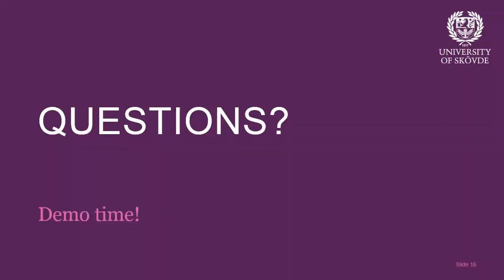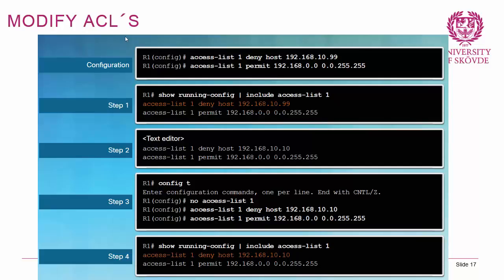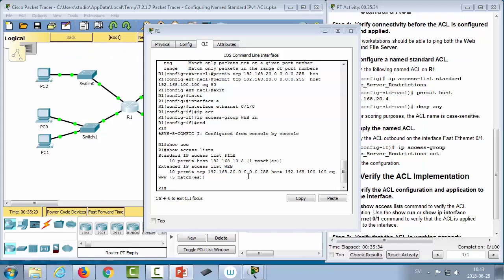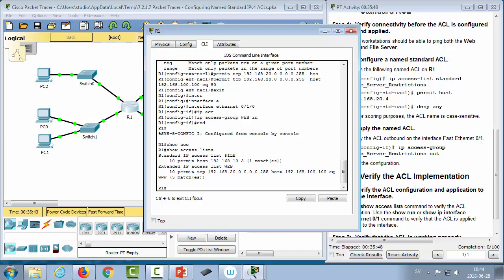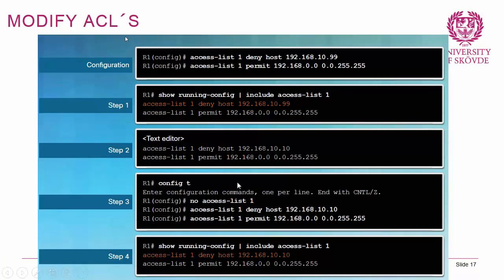Let's look at how to modify ACLs. ACLs are created with numbered sequence entries — by default, the first entry gets number 10, the next 20, and so on. One method to modify an ACL is to save it to a text editor, make changes there, then remove the ACL with 'no access-list [number]' and paste the updated version back in from the text editor.